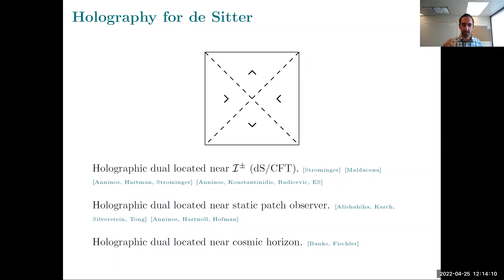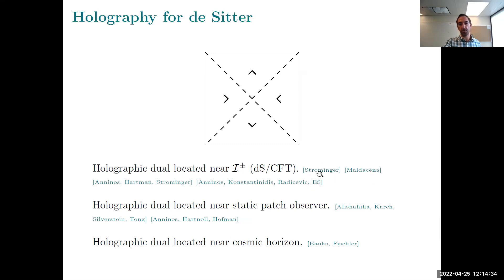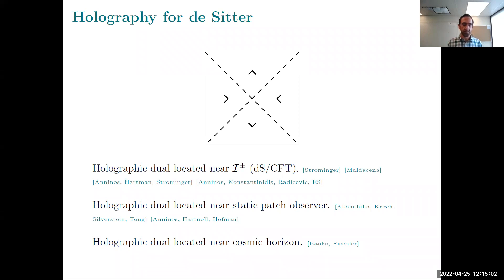Immediately after a positive cosmological constant was discovered, people tried to do the analog of AdS/CFT, placing the holographic dual theory at the conformal boundary of the spacetime — scri-minus and scri-plus. This was called dS/CFT, put forward by these people. It took a while before the first concrete model was proposed, and we generalized it to a family of models. But these models are quite ugly — the gravity theory involves higher-spin gravity, it's very hard to compute anything in the bulk, and there are things still not understood, including higher topology surfaces.